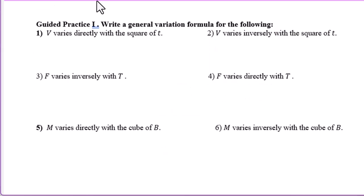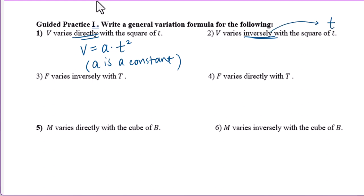Practice 1: Write a general variation formula for the following. Question 1: V varies directly with the square of t. Directly means a positive exponent, so we have t to the second power. V equals A times t squared, where A is a constant. Question 2: V varies inversely with the square of t. Inversely means a negative exponent, so V equals A times t to the negative second power, where A is a constant.